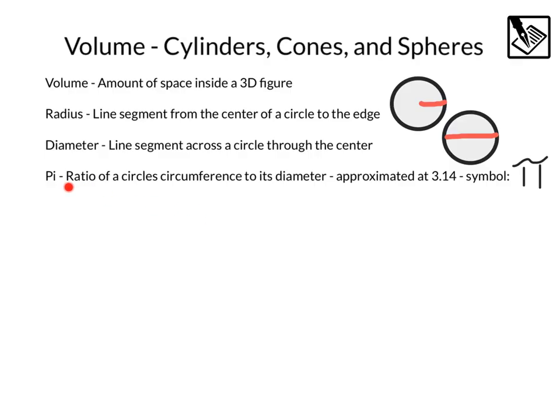And lastly, pi. That's the ratio of a circle's circumference to its diameter. We approximate it, usually at 3.14, although it's irrational, so it goes on and on forever. And we use this symbol to represent pi.